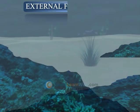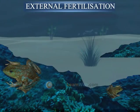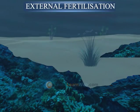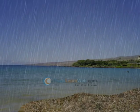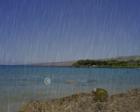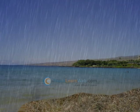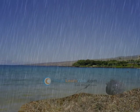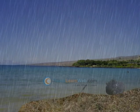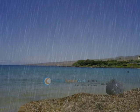External fertilization is the process in which fusion of male and female gametes takes place outside the body. For example, during rainy season, frogs move to the ponds where the female lays hundreds of eggs in water. Sperms move randomly in water and fertilize the eggs.